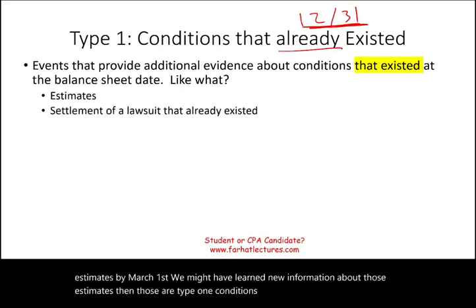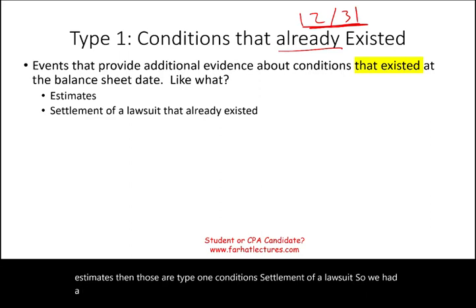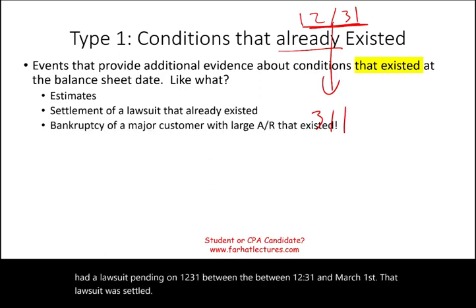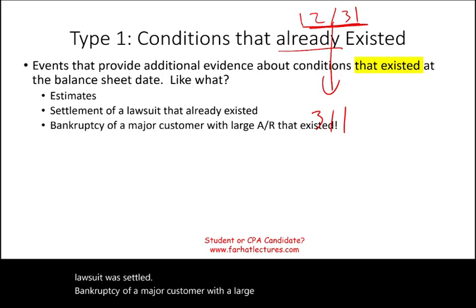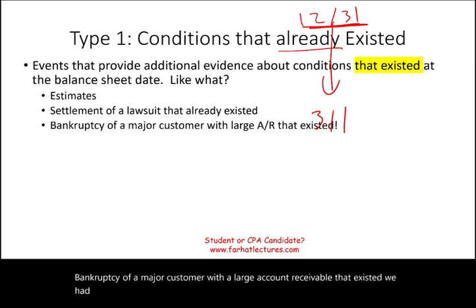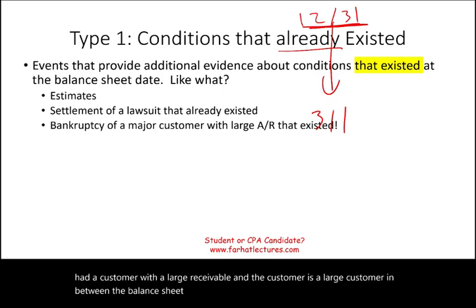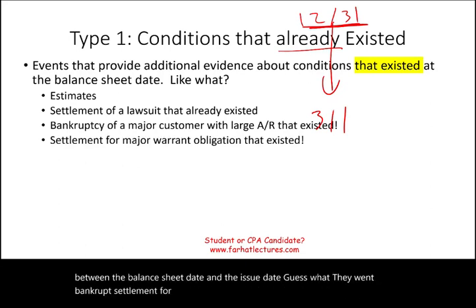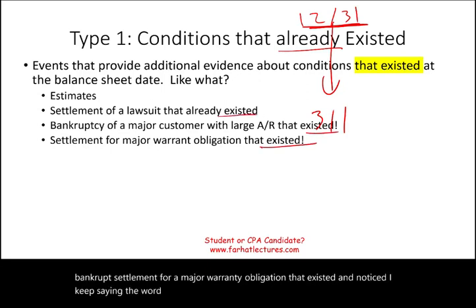Some examples of Type 1 events: settlement of a lawsuit — we had a lawsuit pending on 12/31, and between 12/31 and March 1st that lawsuit was settled. Bankruptcy of a major customer with a large account receivable that existed — we had a customer with a large receivable, and that customer went bankrupt between the balance sheet date and the issue date. Settlement of a major warranty obligation that existed. Notice I keep saying 'existed' — it means they existed as of the balance sheet date; they were not new.